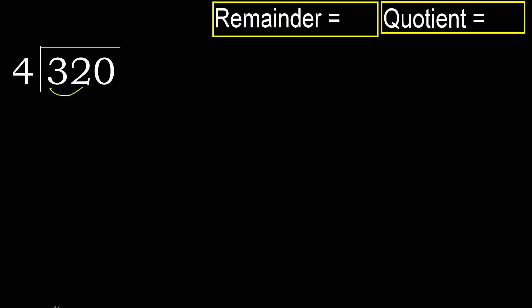32 is not less than 4, therefore we work with 32 and 4. Multiply 4 by which number is nearest to 32 but not greater?